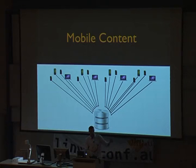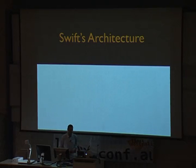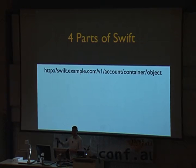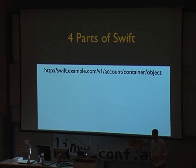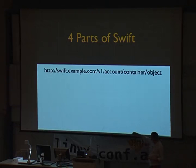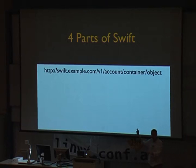So we've seen the overall use cases. How does Swift do this? Looking at a very high-level overview of the architecture, there are four basic parts of Swift. Every object in Swift is uniquely addressable by a URI — Swift has a REST API. Here's an example: the prefix up to slash V1 is simply the domain name and API version. Then you have three parts: the account, the container, and the object.